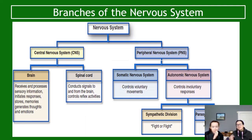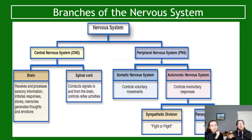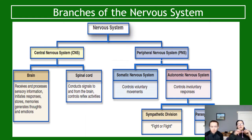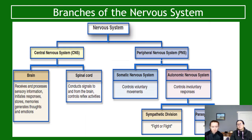Section two of this key area is about neural pathways. Rather than looking at the nervous system as a whole, we'll look at an individual neuron and how it transmits a signal through the nervous system. See you in part two.